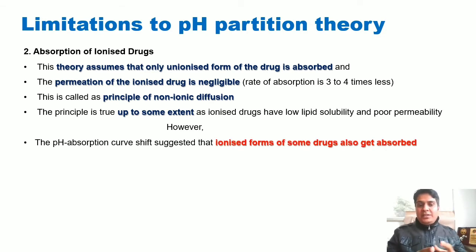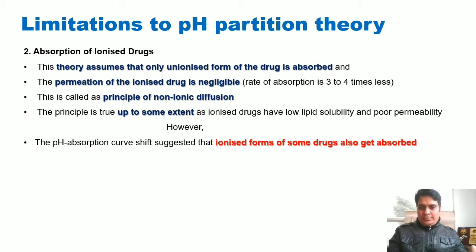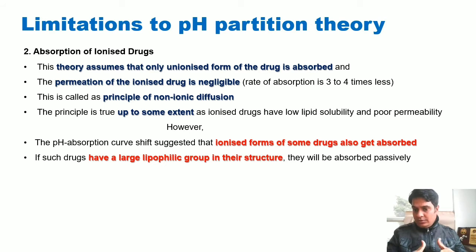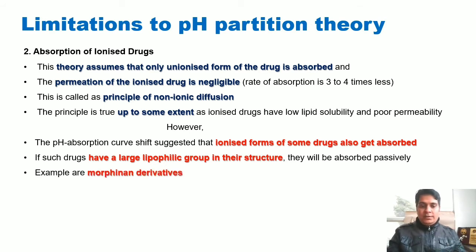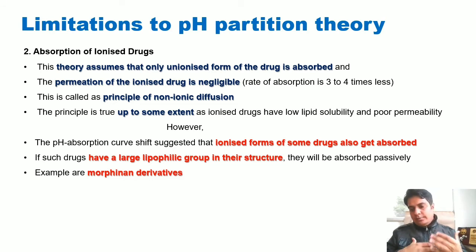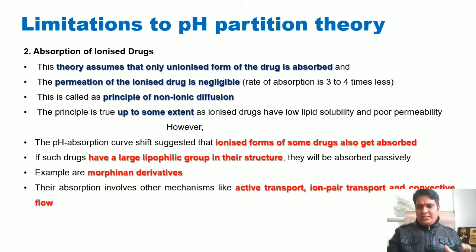The pH absorption curve shift suggests that the ionized form of some drugs also gets absorbed. If such drugs have a large lipophilic group in their structure, they will be absorbed passively even if they are ionic. Examples of this category include morphine derivatives — these are ionic drugs but have a strong lipophilic group in their structure, so they are absorbed passively as well as through other mechanisms like active transport, ion pair, and convective flow.